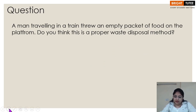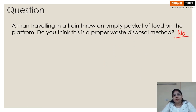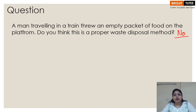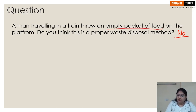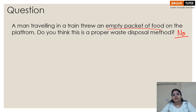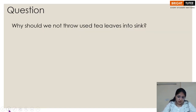A man traveling in a train throws an empty food packet on the platform — is this a proper waste disposal method? No, this is not proper disposal. There are dustbins in the train; the person could have used one. If not, he should have kept the packet in his bag and disposed of it at the destination. Any waste should be kept in a packet and then thrown in a dustbin.